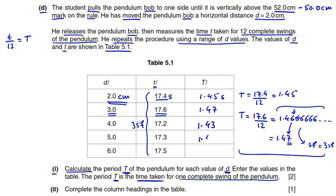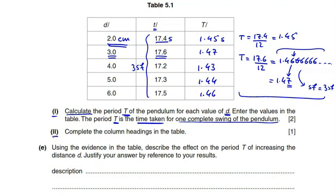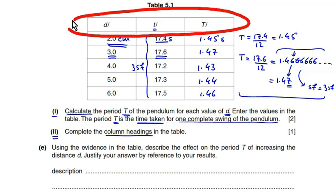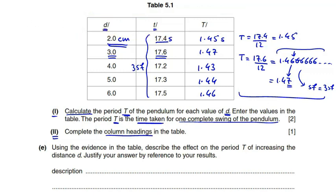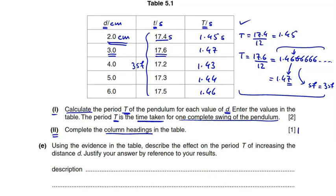Use the same method to determine the rest of the period values by yourself. Part d2 says: complete the column headings in the table. Each column heading contains a quantity and a forward slash mark but lacks a unit. The unit of distance d is centimeter, the unit of time small t taken for 12 swings is second, and the unit of period capital T is also second. Now the column headings are complete — one mark for that.